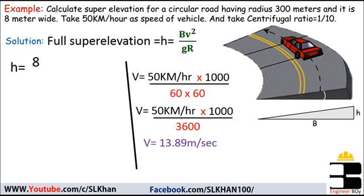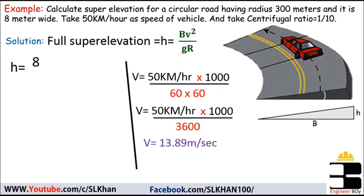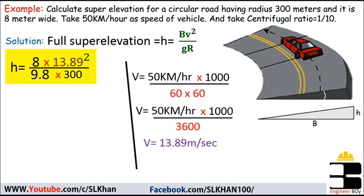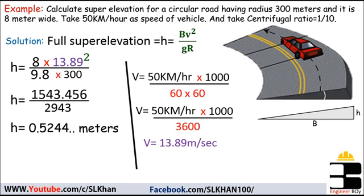Now we put this value into the formula: h equals 8 times 13.89 squared, divided by g which is 9.81 meters per second squared, and r which is 300 meters. Doing the math gives the value of full super elevation as 0.524 meters, or 52.5 centimeters.